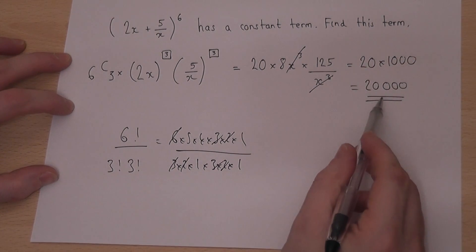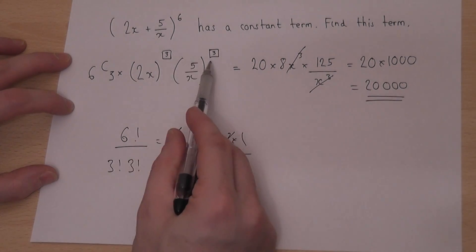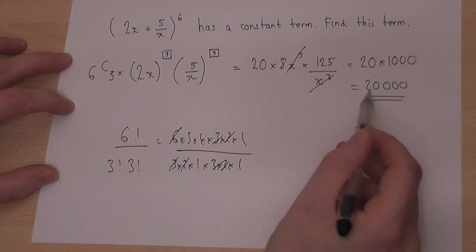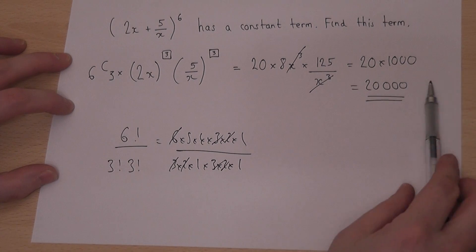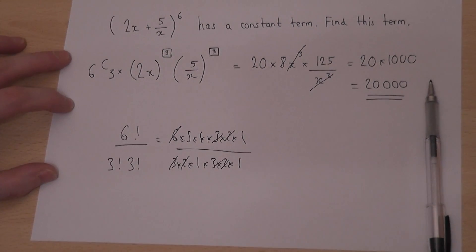So we have found a term which, because the x's cancel out, is just a constant, and this constant term is 20,000.